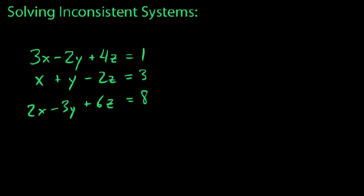And then a consistent dependent system in which all three planes maybe intersect along a particular line, or maybe just all lie flat on top of each other. It's all ordered triples you could ever think of satisfy each one. So let's go ahead and start by taking a look at the inconsistent system. First things first, when we say inconsistent, we want to use this word here, inconsistent.